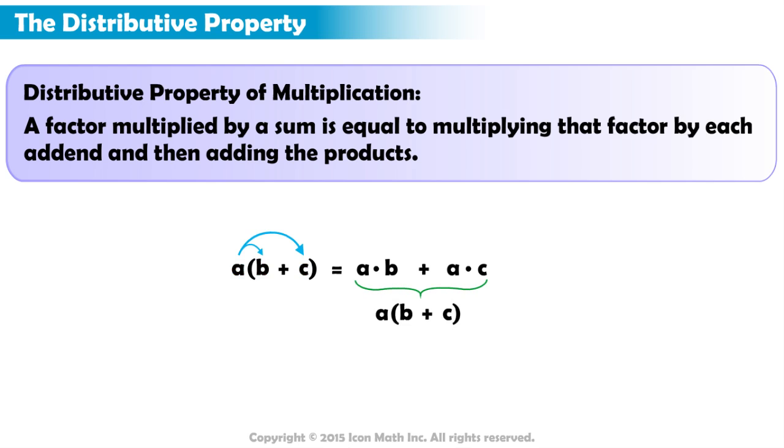When we undo distributing, we take out the common factor, or a, and rewrite the expression as a factor, a, multiplied by a sum.